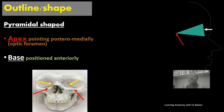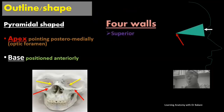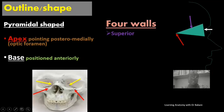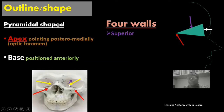The bony orbit is bordered by four walls. We have the superior wall, which forms the roof of the orbit. This wall borders both the orbit and the anterior cranial fossa — we already established that the anterior cranial fossa is above, and inferiorly is where we have the orbit or the eye socket.